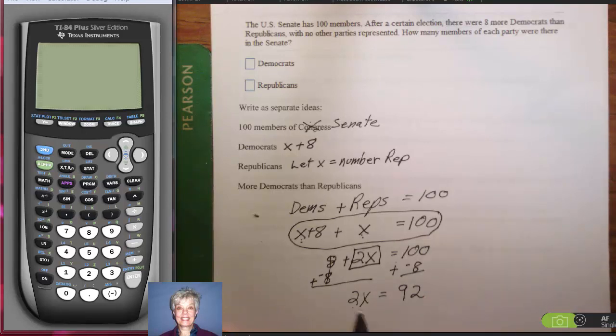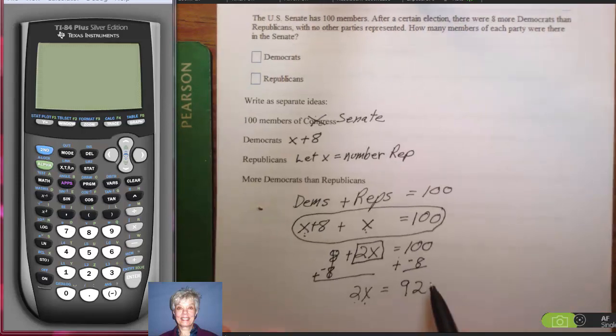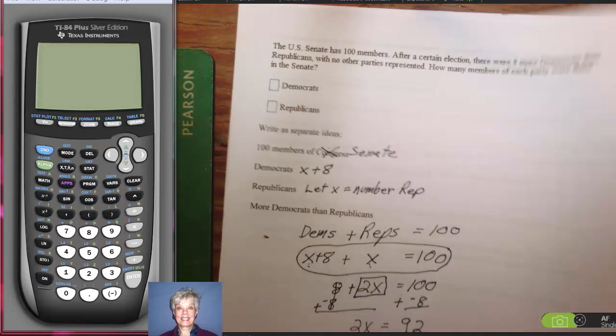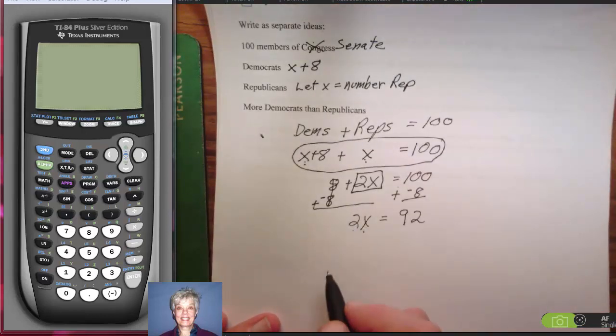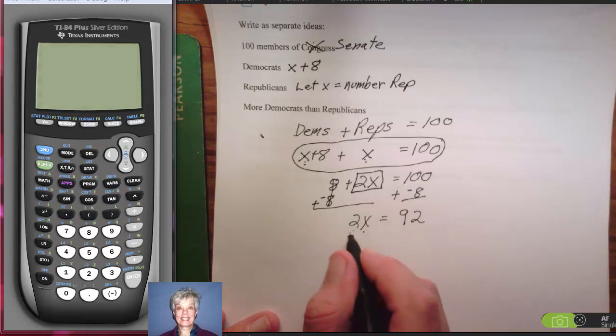Now, I have one variable term on the left, one constant term on the right. We call pure numbers constants. Let me move this now, move it up a little. 2 is multiplied by the X, and so to get rid of that 2 and just get X by itself, I'm going to do the opposite of multiplication, which is division.